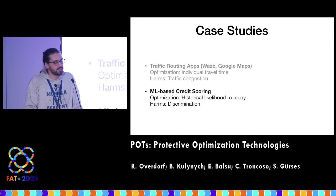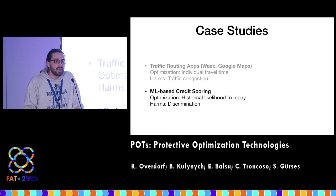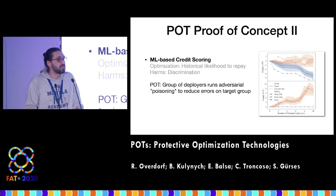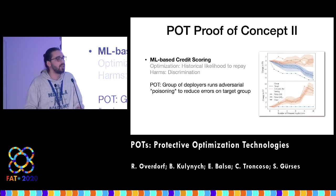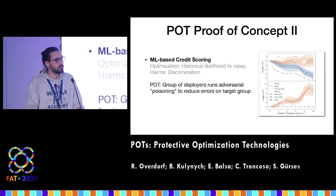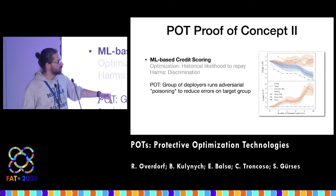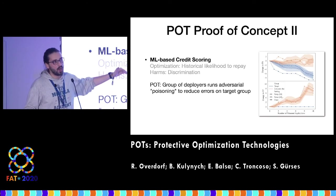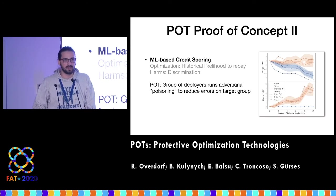In the second case study, we look at a machine learning-based credit scoring system that is discriminatory or unfair. We use techniques from adversarial machine learning — assuming there's a group deploying the POT that will run a so-called poisoning attack, injecting very specific training points into the model's training dataset, in such a way that the model makes fewer mistakes on some target group, to some extent rectifying the issue.